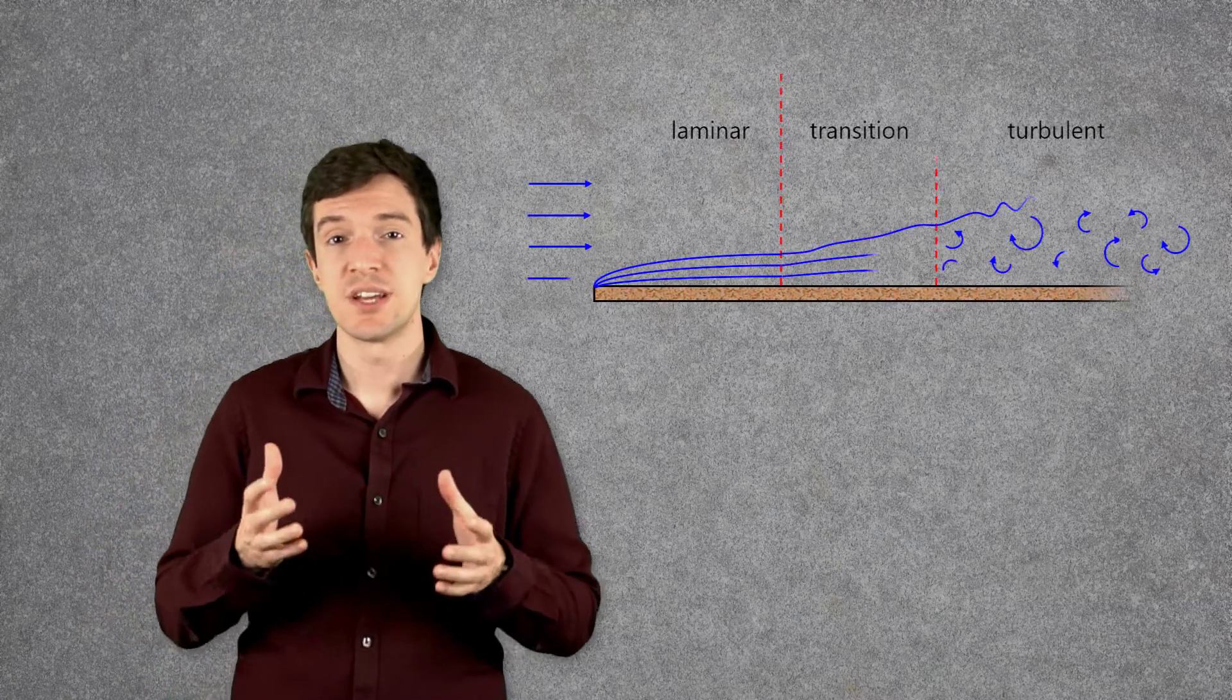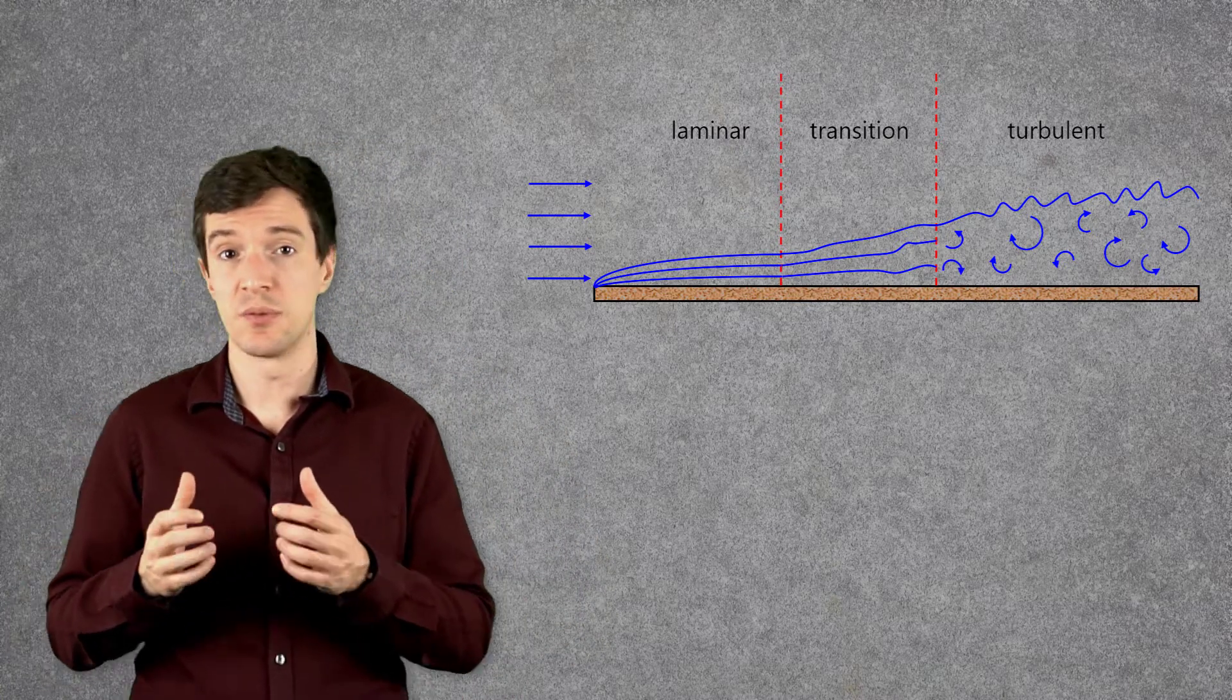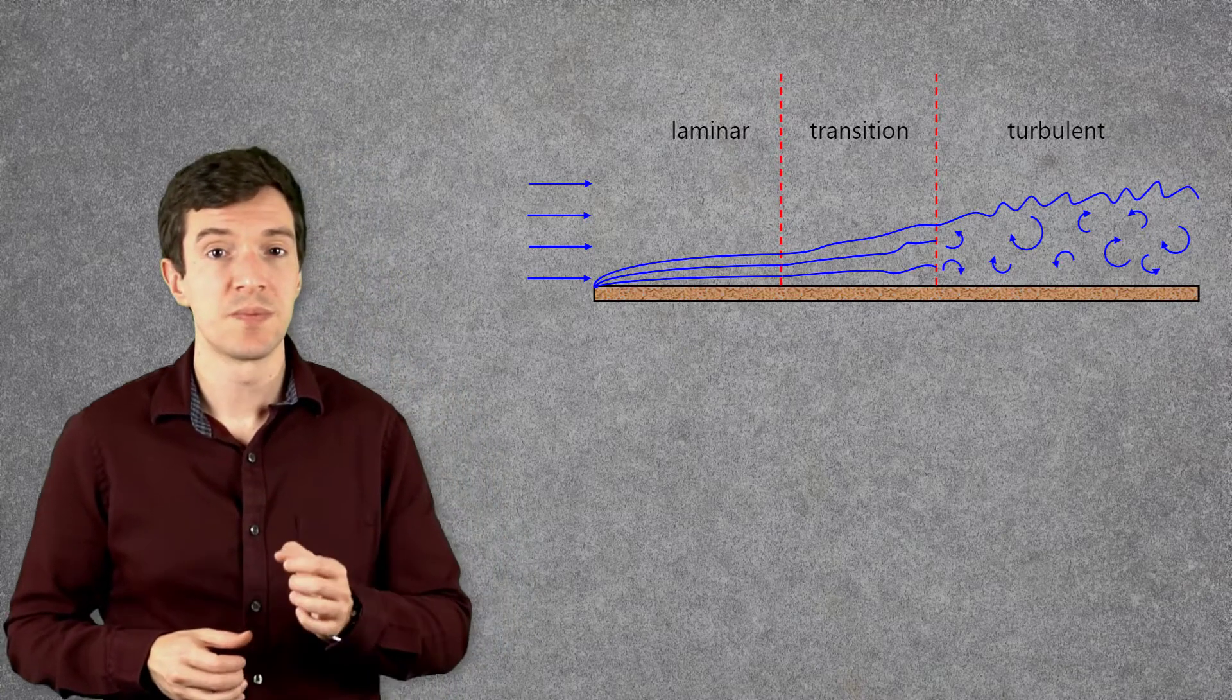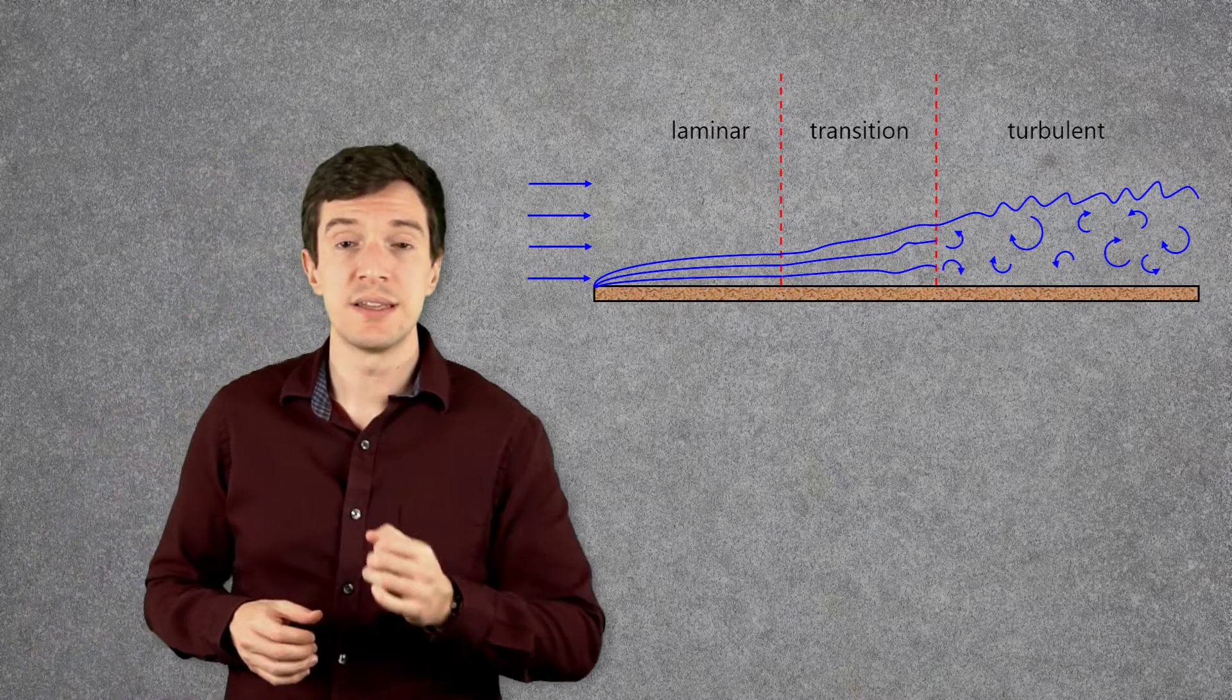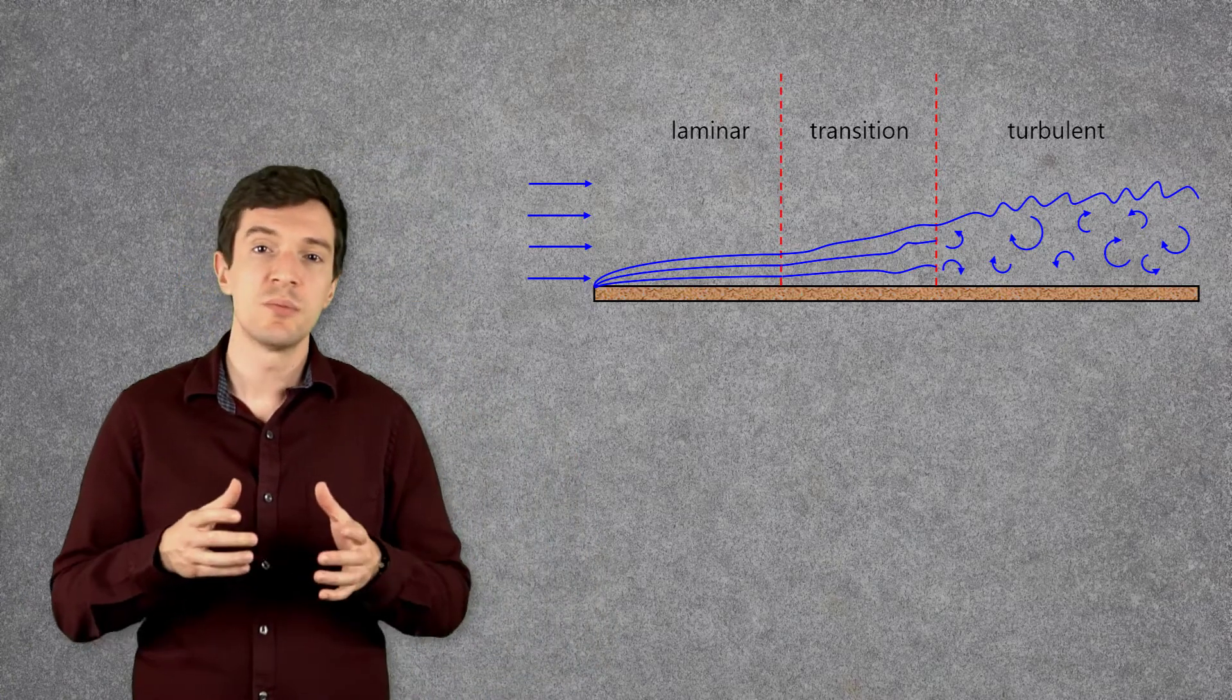This concept lets us obtain analytical solutions of a wide range of flow problems. Let's now analyze a viscous flow over a flat plate. The flow passing over the flat plate generates a boundary layer starting from the leading edge of the plate. As we move along the plate, we can see that the boundary layer thickness grows.